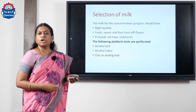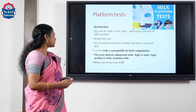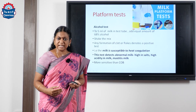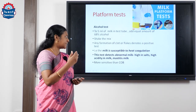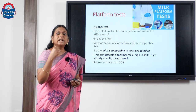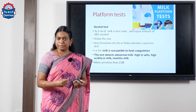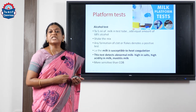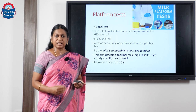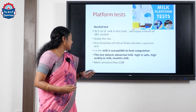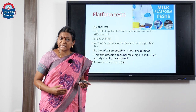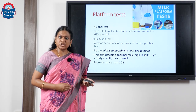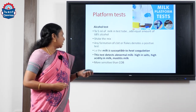The platform tests we commonly perform are the alcohol test, alcohol index test, and clot-on-boiling test. In the alcohol test, we take 5 ml of milk in a test tube, add 68% alcohol, shake the mix, and look for any clot formation. If there is a clot formation, it indicates the test is positive and the milk is rejected. Usually milk that is high in salts, high in acidity, or from a cow which has mastitis will fail this alcohol test.